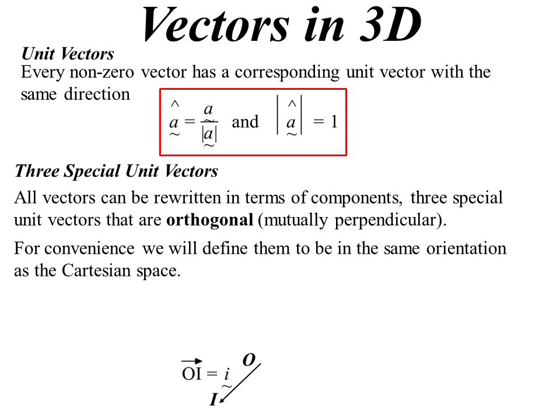So in the X direction, which we saw in two dimensions, we're going to define that one to be I. In the Y direction, we'll define that to be J. No prizes for guessing what's going to happen in the Z direction. We'll call that one K. They're going to be our three unit vectors.